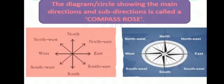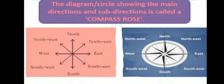The diagram or circle showing the main directions and subdirections is called a compass rose. Look at the picture. In this compass rose, we can see the 4 main directions — East, West, North and South — and subdirections like North-West, South-West, South-East and North-East. This compass rose is also useful in many ways.